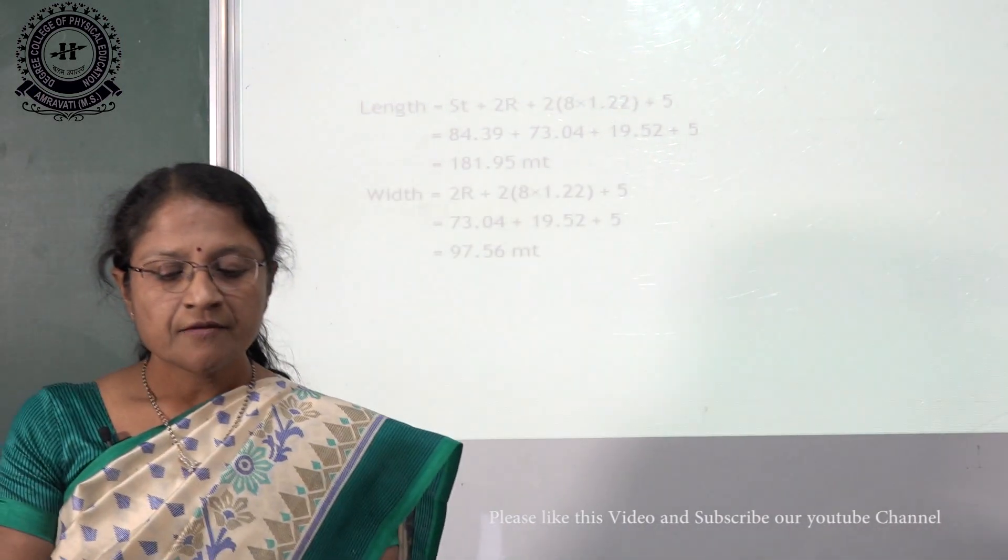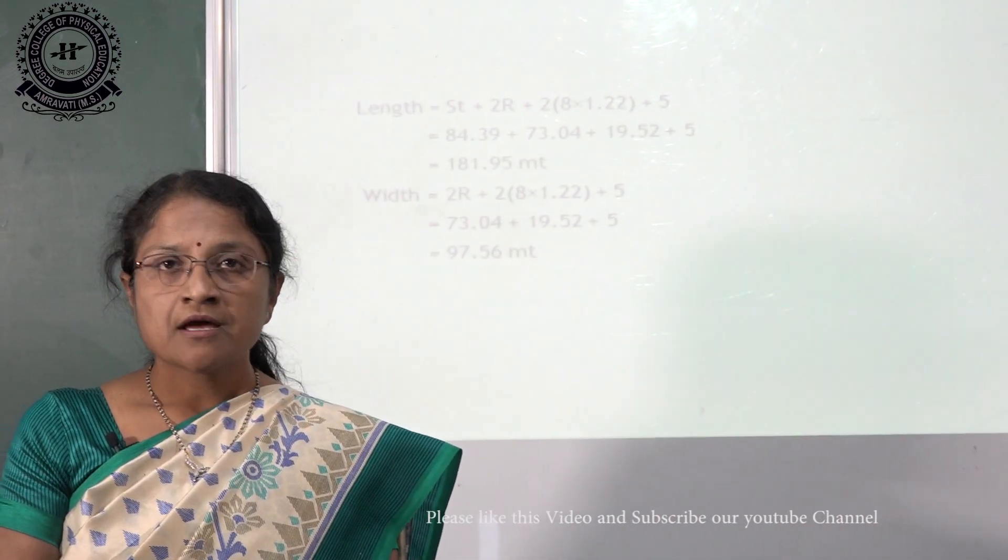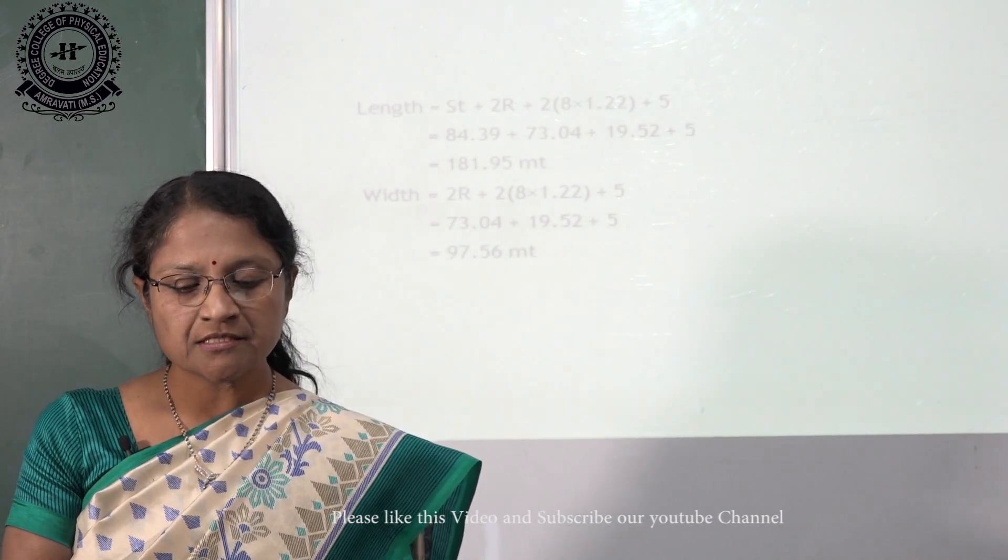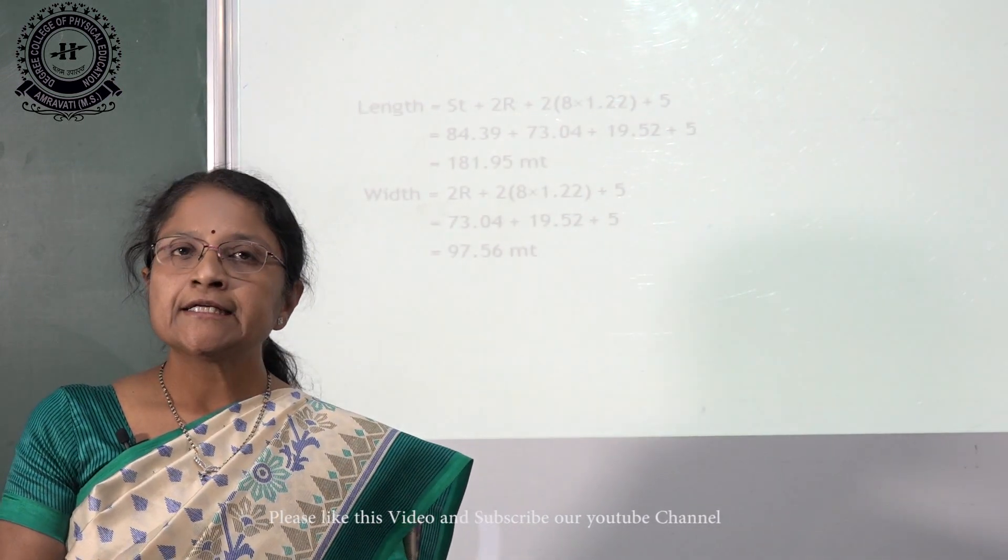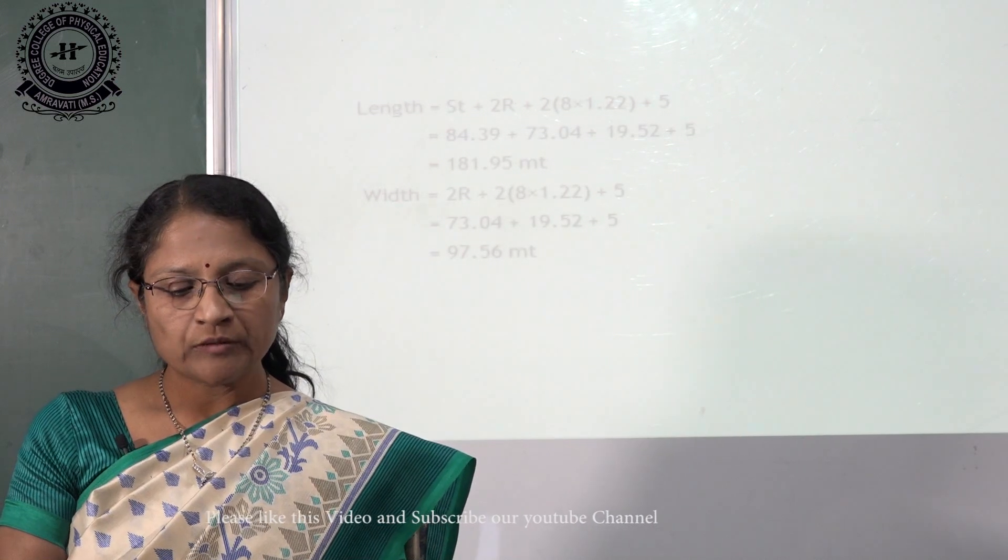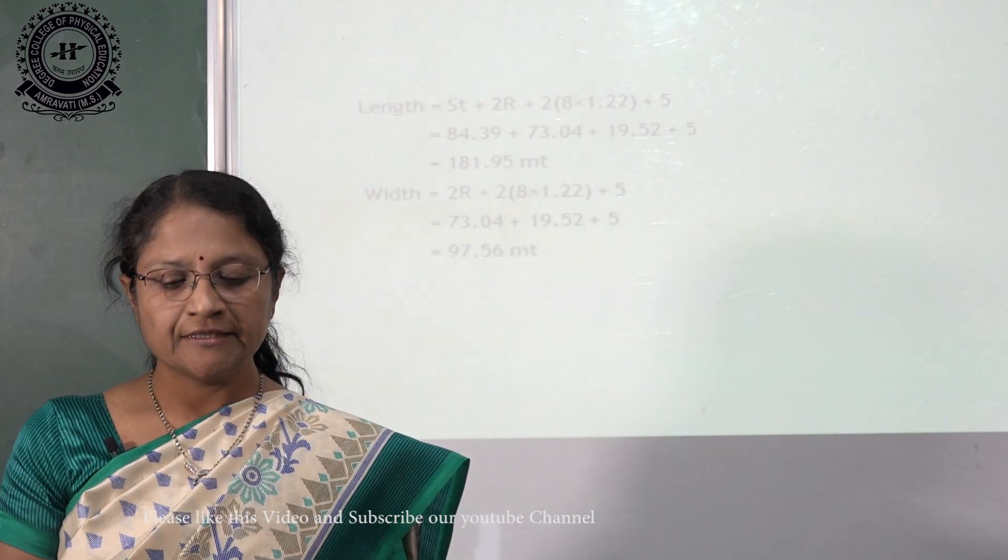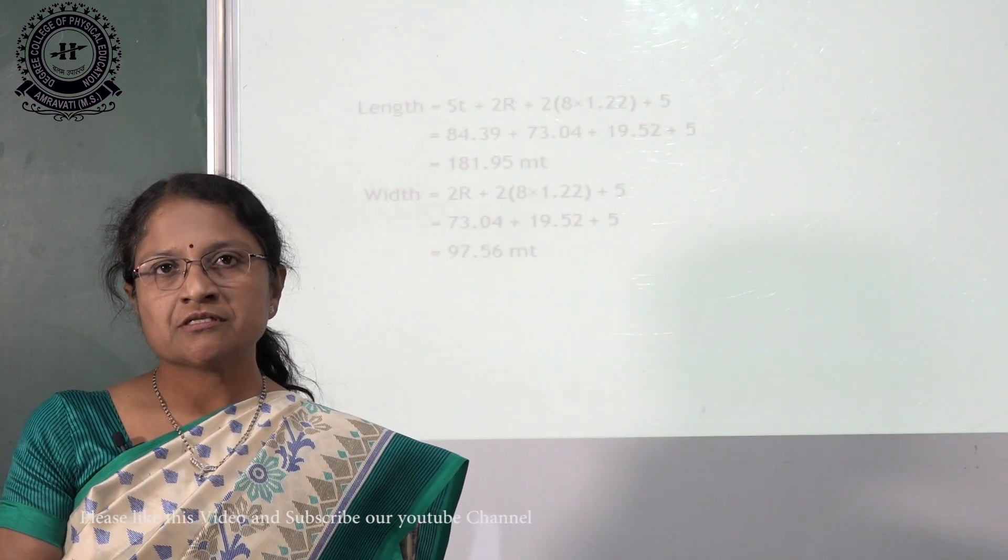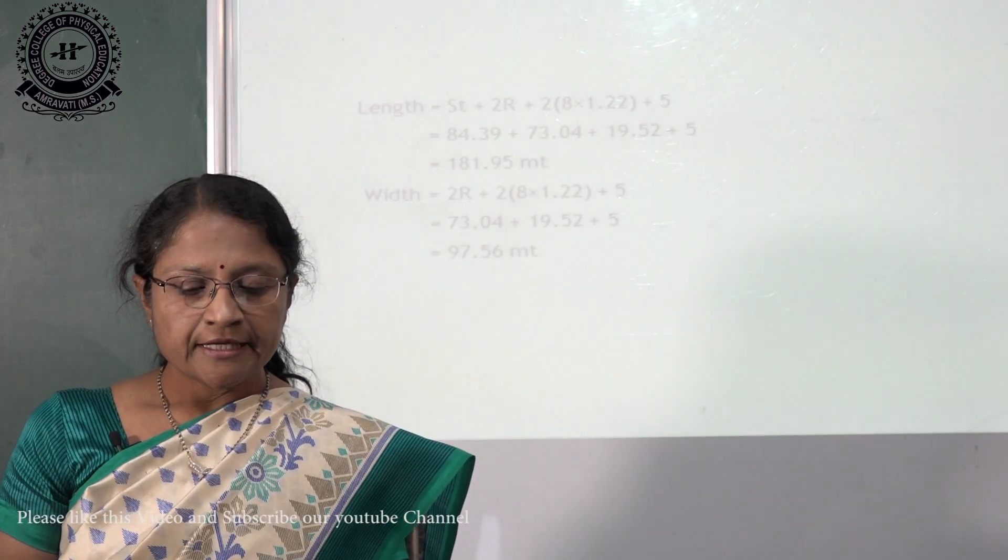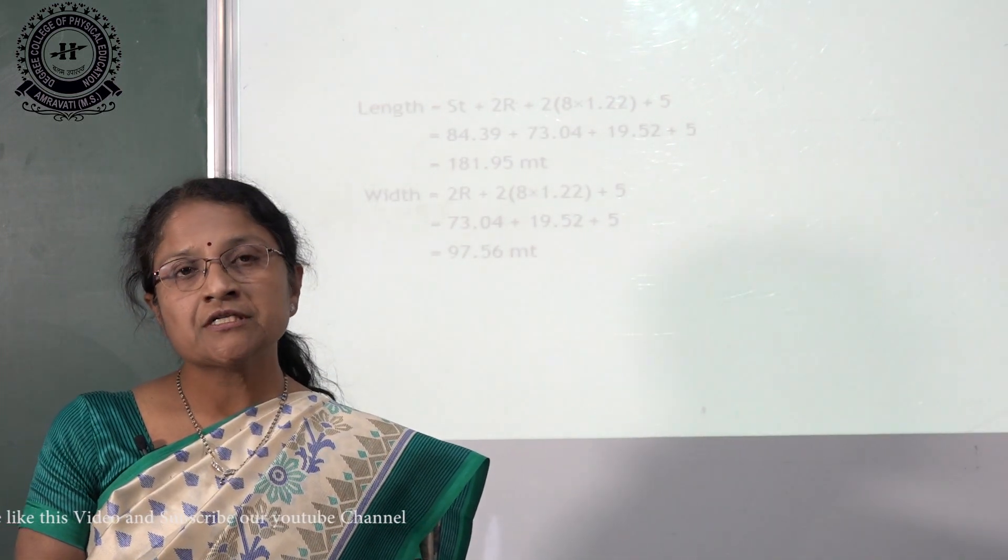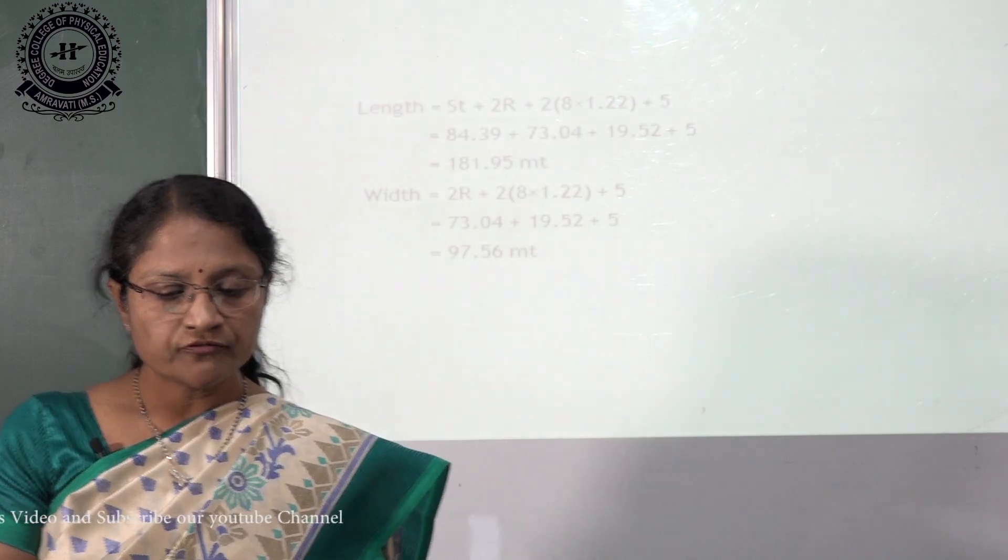For width: 2r means 2 radius plus 2 times 8 lanes, 8 into 1.22 width of lane plus 5 meters, which is 97.56 meters, the width of our track.